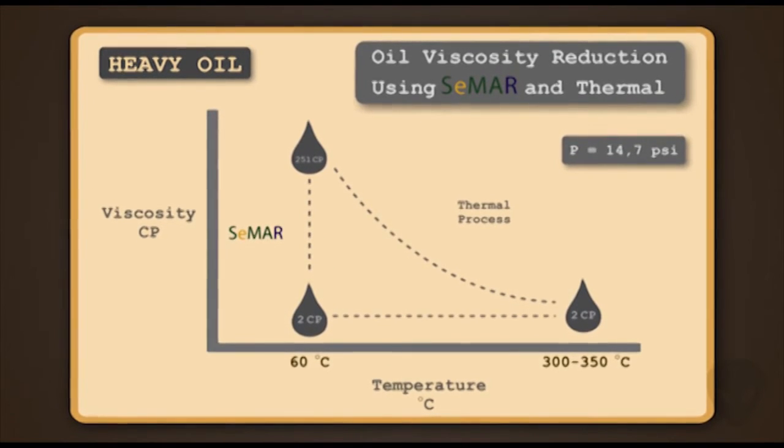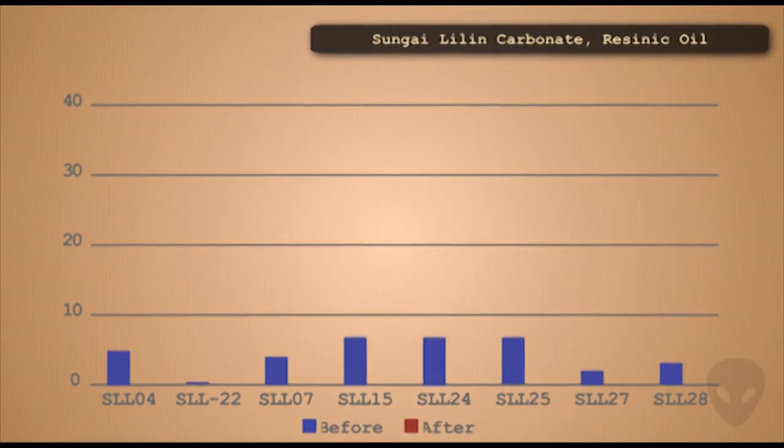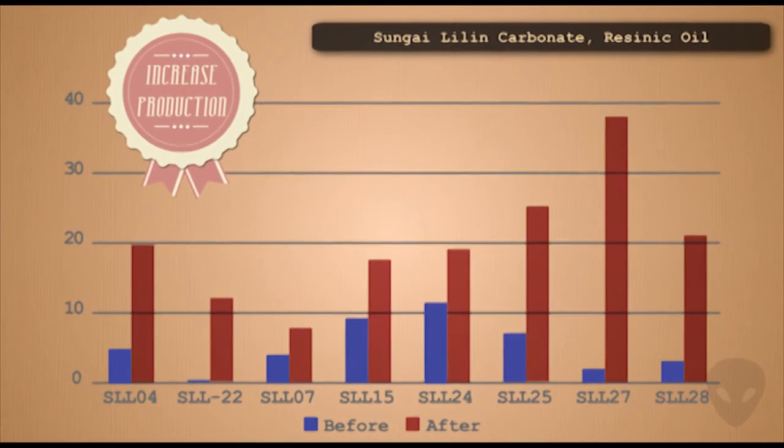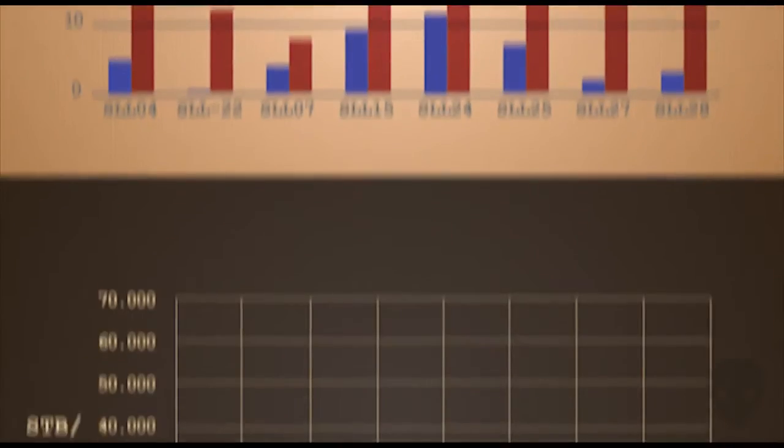The SMAR implementation in some Indonesian oil fields showed good results. Sunalilin field that's located in Sumatra, Indonesia has oil properties with an API gravity of 34. With SMAR injection applied, the oil production was increased significantly.